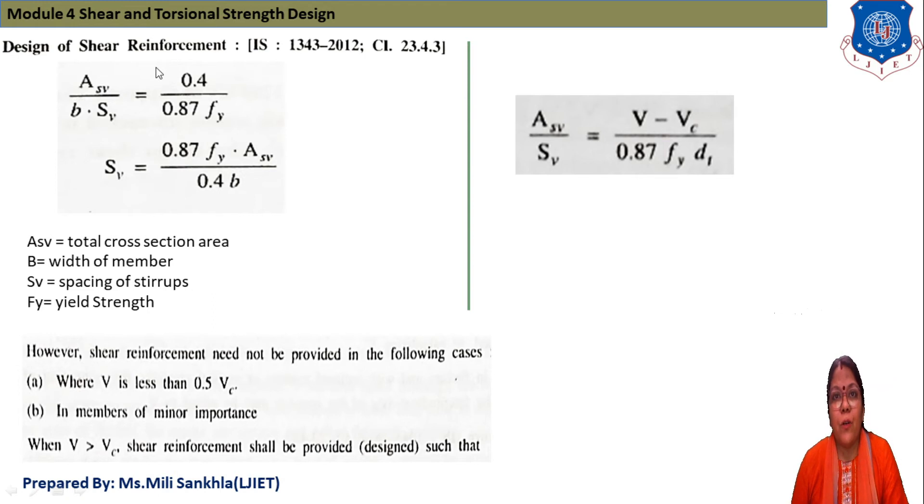Design for shear reinforcement that will be given in IS 1343-2012 clause number 23.4.3. And equation ASV divided by B into SV is equal to 0.4 divided by 0.87 FY and we find out spacing of stirrups that is equal to 0.87 FY ASV divided by 0.4 B. What is ASV? That is cross section area of stirrups. B is equal to width of member, SV is equal to spacing of stirrups and FY is equal to yield strength of stirrups.